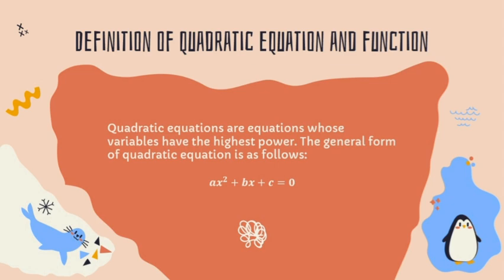Quadratic equations are equations whose variables have the highest power. The general form of a quadratic equation is ax² + bx + c = 0.